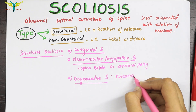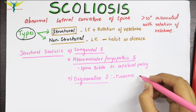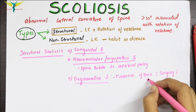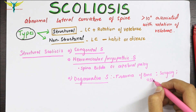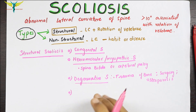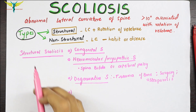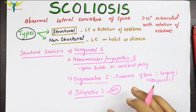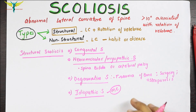Degenerative scoliosis can occur due to trauma of the bone, back surgery, or in cases of osteoporosis. The idiopathic type of scoliosis is also a structural scoliosis and is the most common type, having no specific or identified cause.